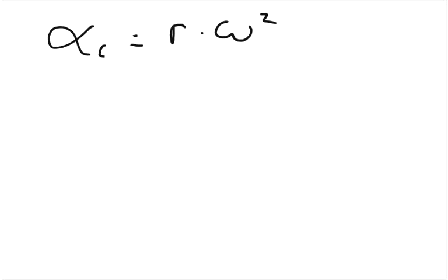The radius is 2.1, the angular speed is 2.6, and we square that. So 2.1 times 2.6 squared equals 14.196 meters per second squared. That's Part A.